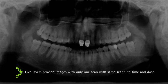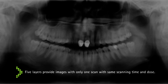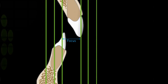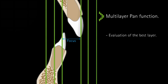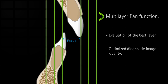The multi-layer Pan function provides five layers with only one operation. The layer with the best display is used for assessment and allows optimum diagnostic statements on images. The multi-layer Pan function facilitates patient positioning and avoids repeat imaging.